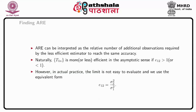Naturally, T1n is more or less efficient in the asymptotic sense if e12 is greater or less than 1. However, in actual practice the limit is not easy to evaluate. So we use the equivalent form e12 = sigma_2 squared divided by sigma_1 squared. We shall use this formula as a measure of relative efficiency — it is called the Asymptotic Relative Efficiency of the sequence of estimators T1n relative to T2n.